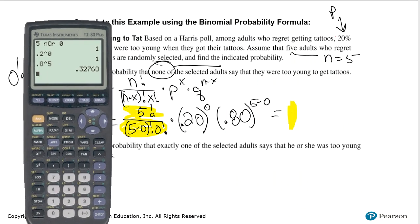So my numbers are 1 times 1 times 0.32768. Well, 1 times 1 times 0.32768 is 0.32768. That means that my probability to three significant digits is 0.328.